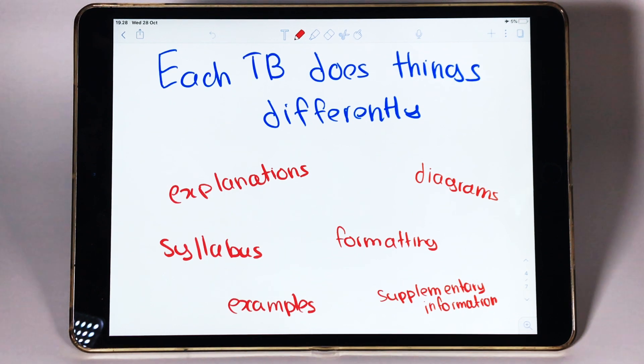And there are specific features that each textbook does differently. For example, explanations. Some textbooks offer very concise explanations of topics while others go on and on, more like a story. Some textbooks have a lot of diagrams, pictures and illustrations, while some mainly focus on text. Some textbooks mainly focus on the syllabus, while others try to include helpful information that might not necessarily be in that syllabus. And even other things like formatting. Some textbooks are just basically text while some textbooks are colorful with pictures and you just like reading it.